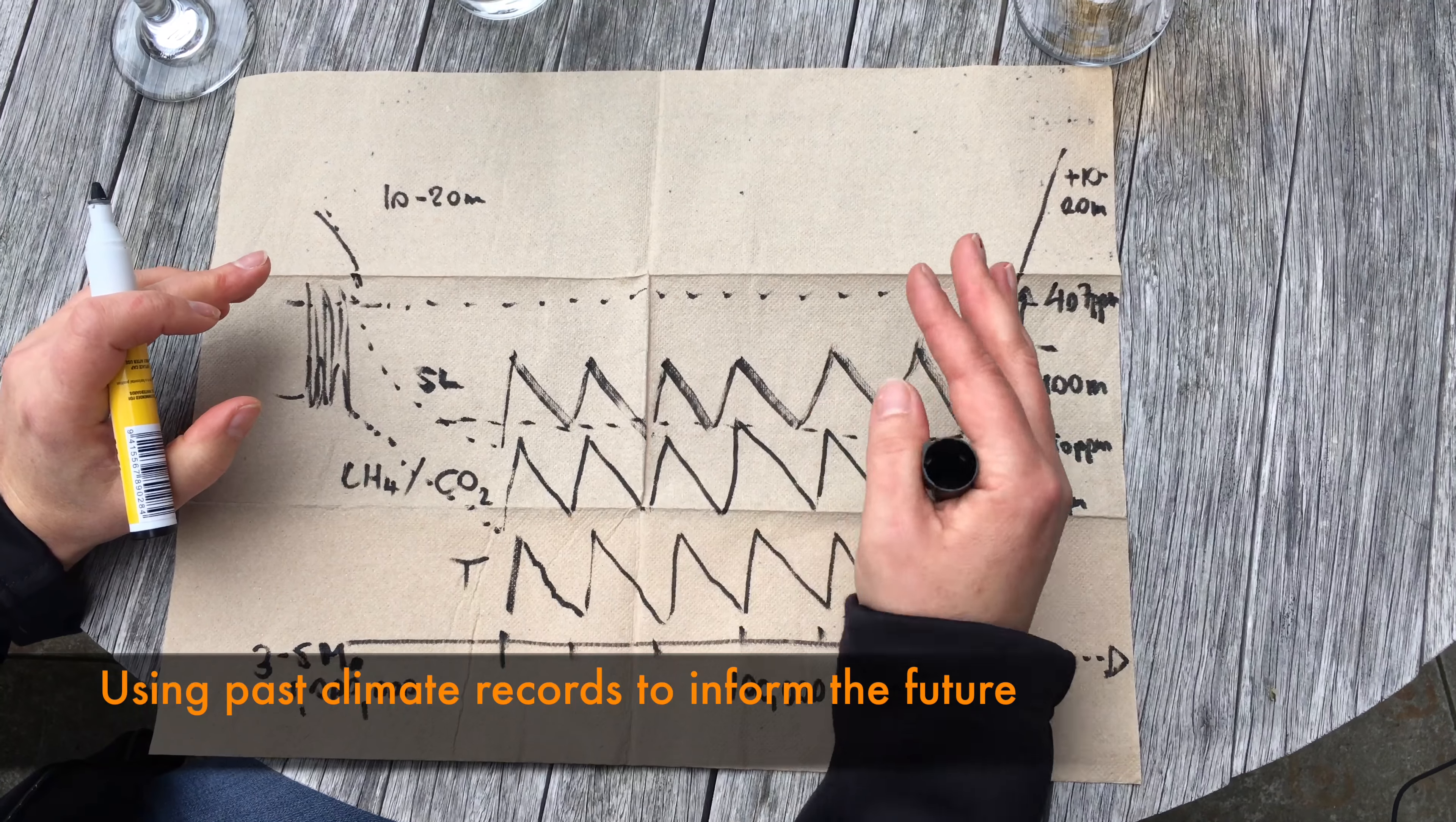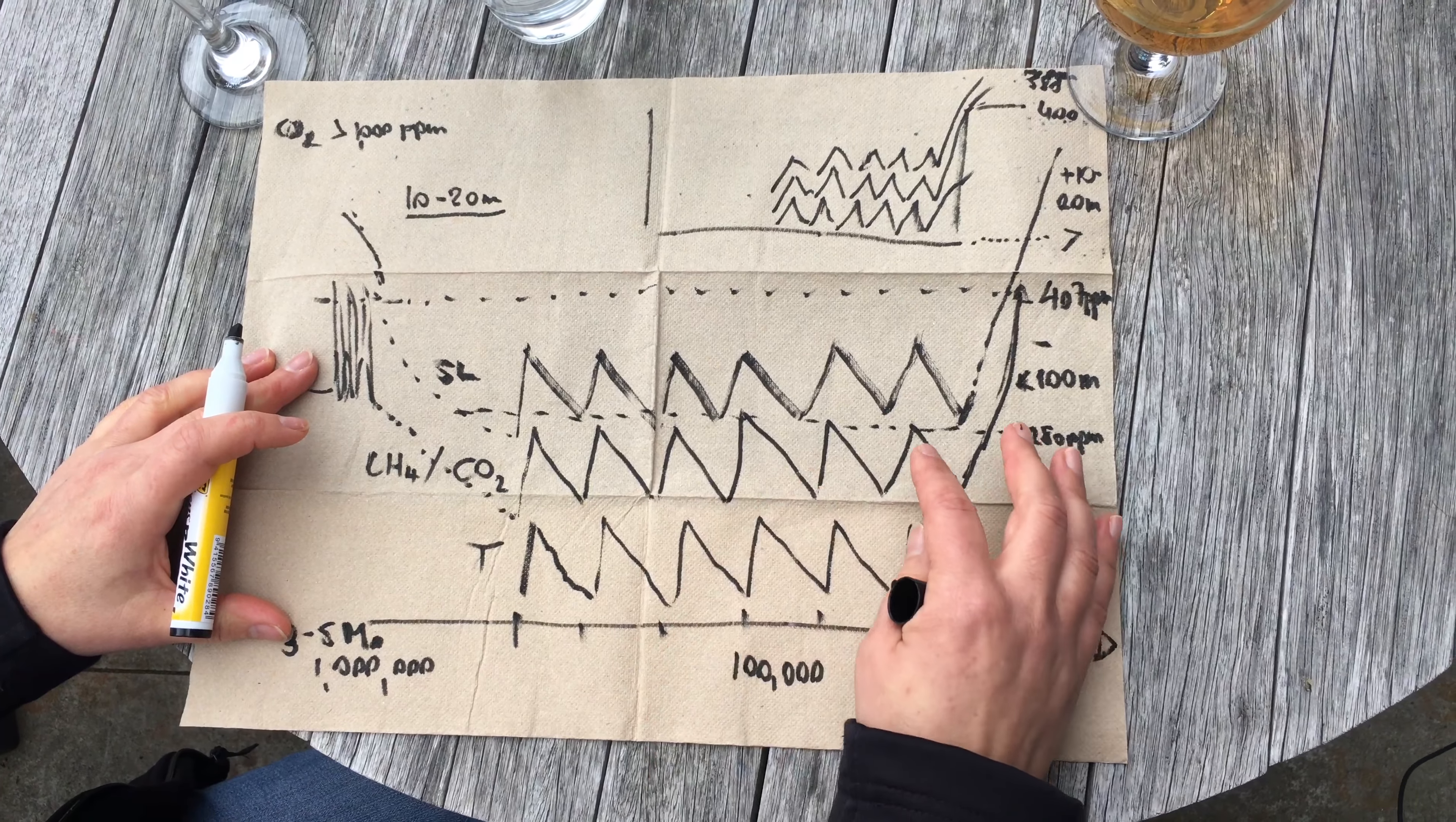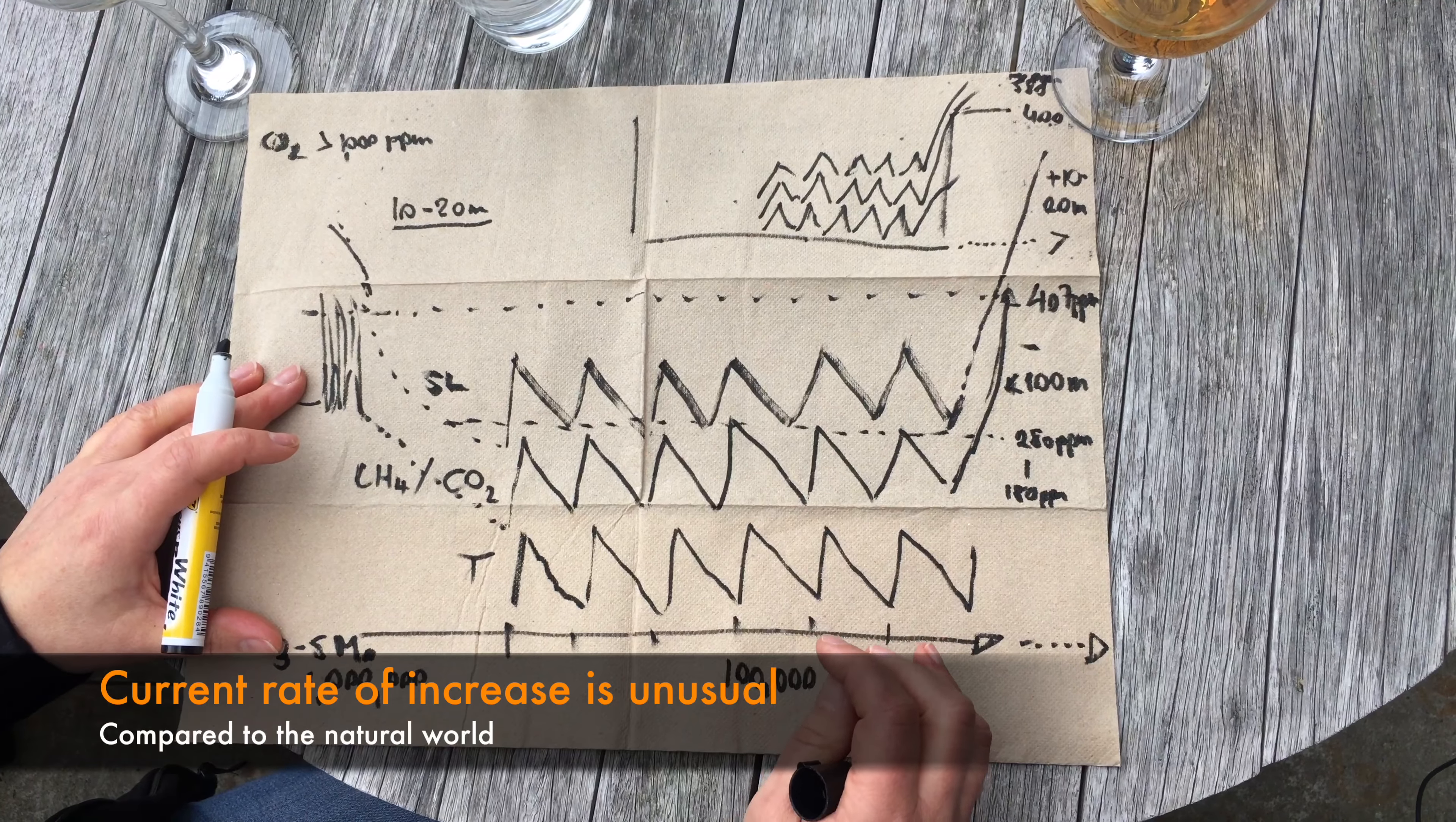You can see how we use past climate records to inform what might happen right now, but also what happens into the future. My main message here is that we've got the physics really well understood. The ice core record showed us that the increase in CO2, the increase in temperature, and even the change in sea level is unusual in terms of its rate of change in what we see in the natural world.